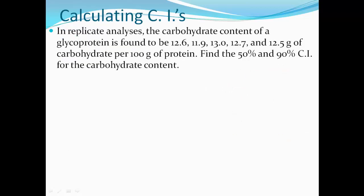This is the example used in your book. It reads, in replicate analysis, the carbohydrate content of a glycoprotein, which is just a protein with a bunch of sugars attached to it, is found to be 12.6, 11.9, 13.0, 12.7, and 12.5 grams of carbohydrate per 100 grams of protein. Find the 50% and the 90% confidence interval for the carbohydrate content. This question is really simple. All you have to do is use the equation that we just talked about.